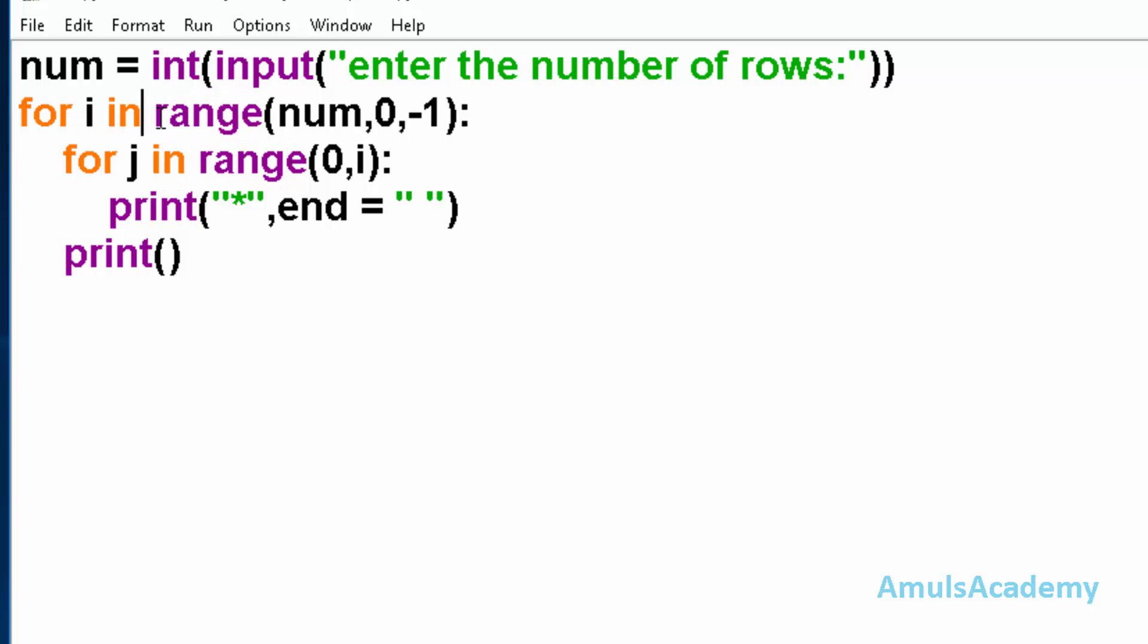In the first for loop we took the range as num, 0, and step -1. If the entered value is 5, then we want 5, 4, 3, 2, 1. For the second loop, the j range is from 0 to i.